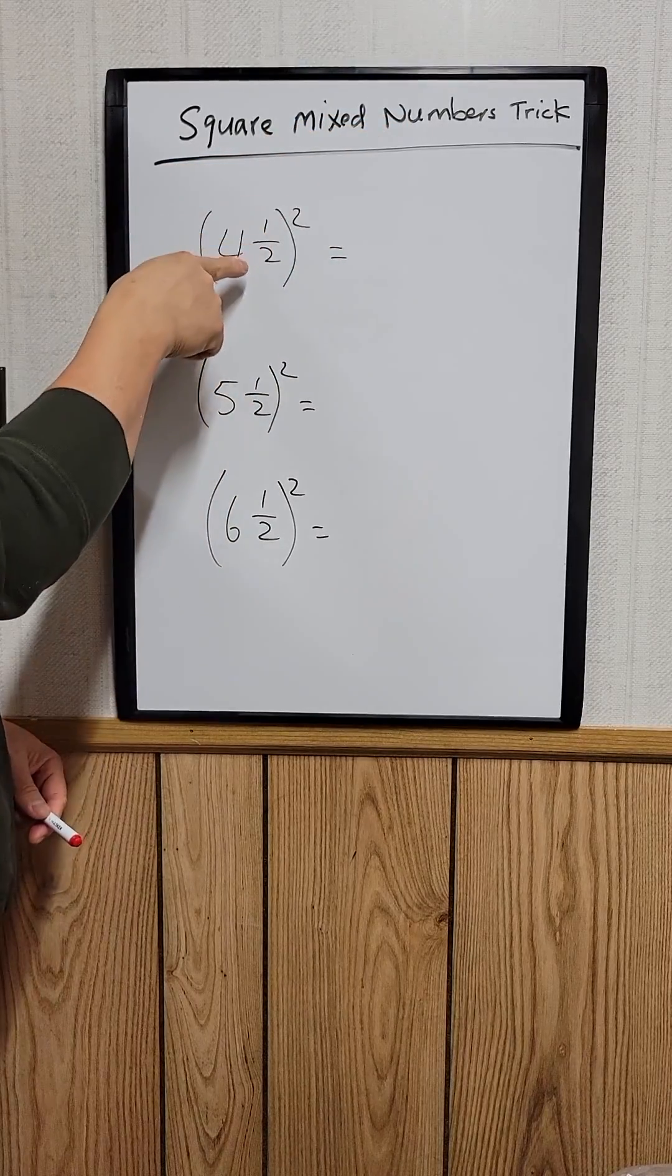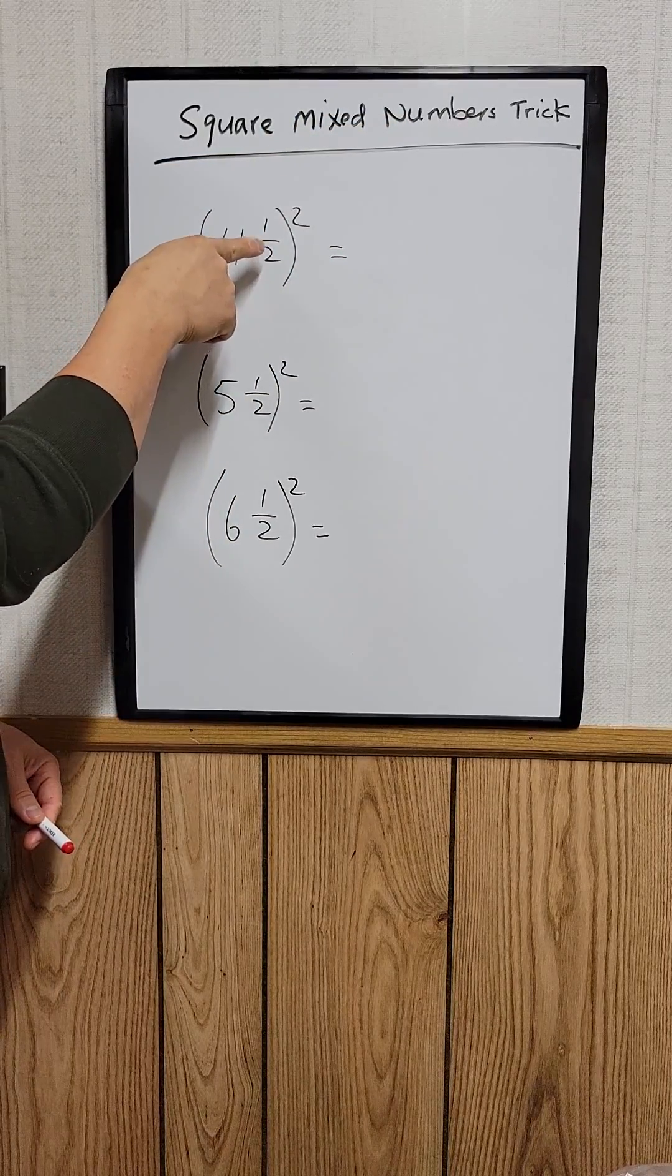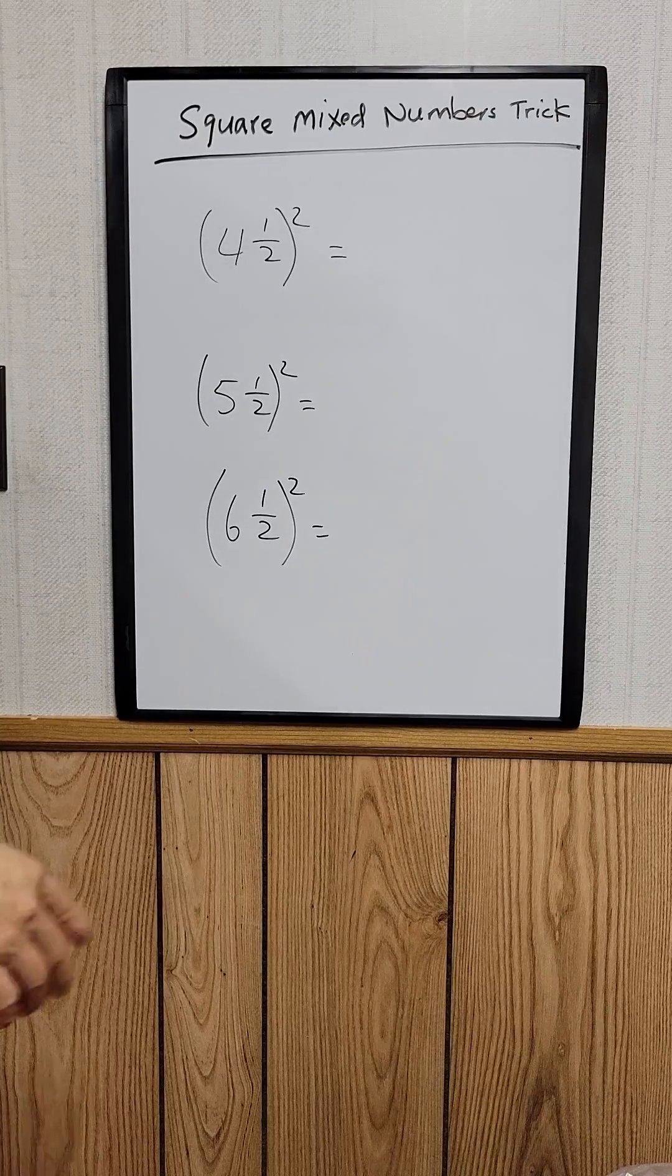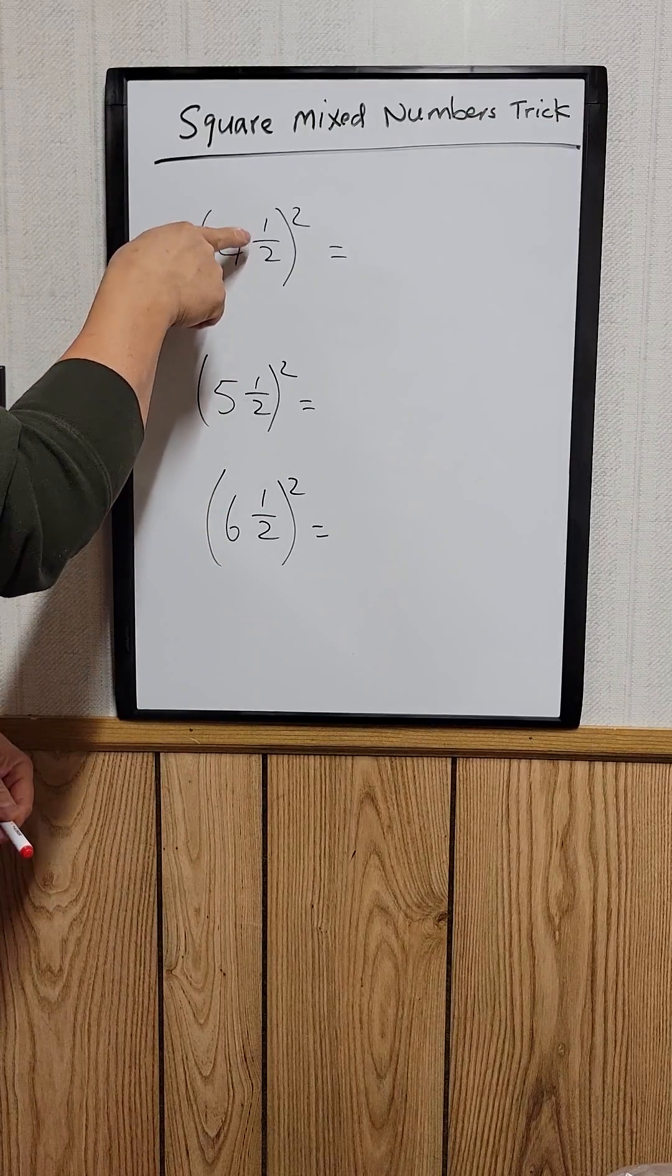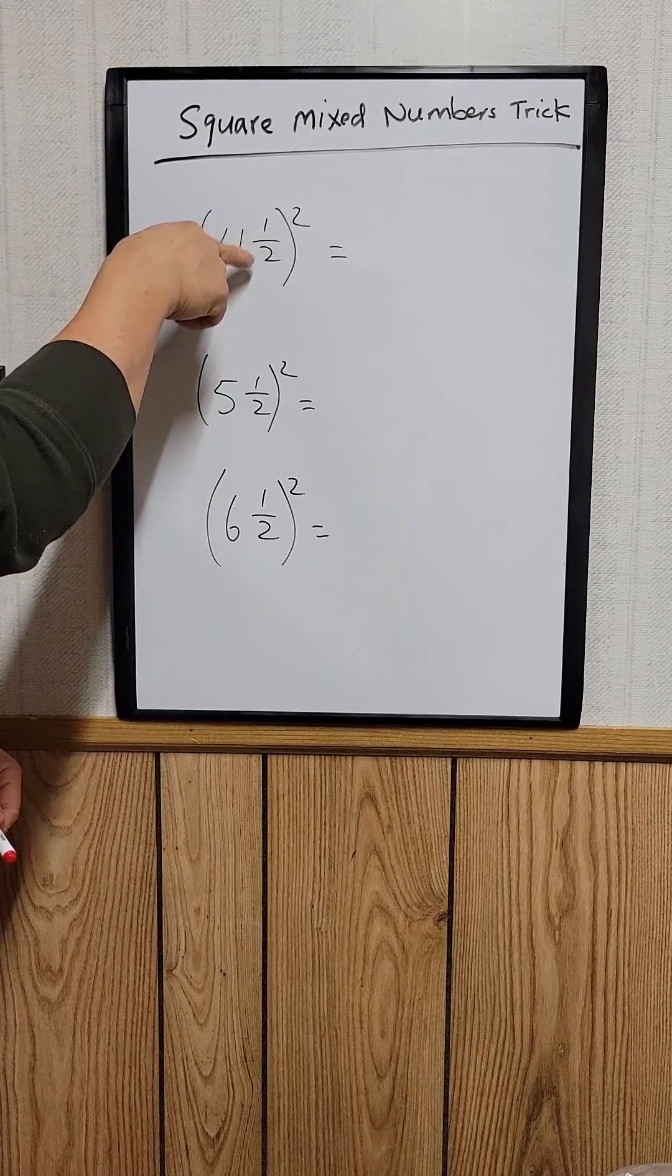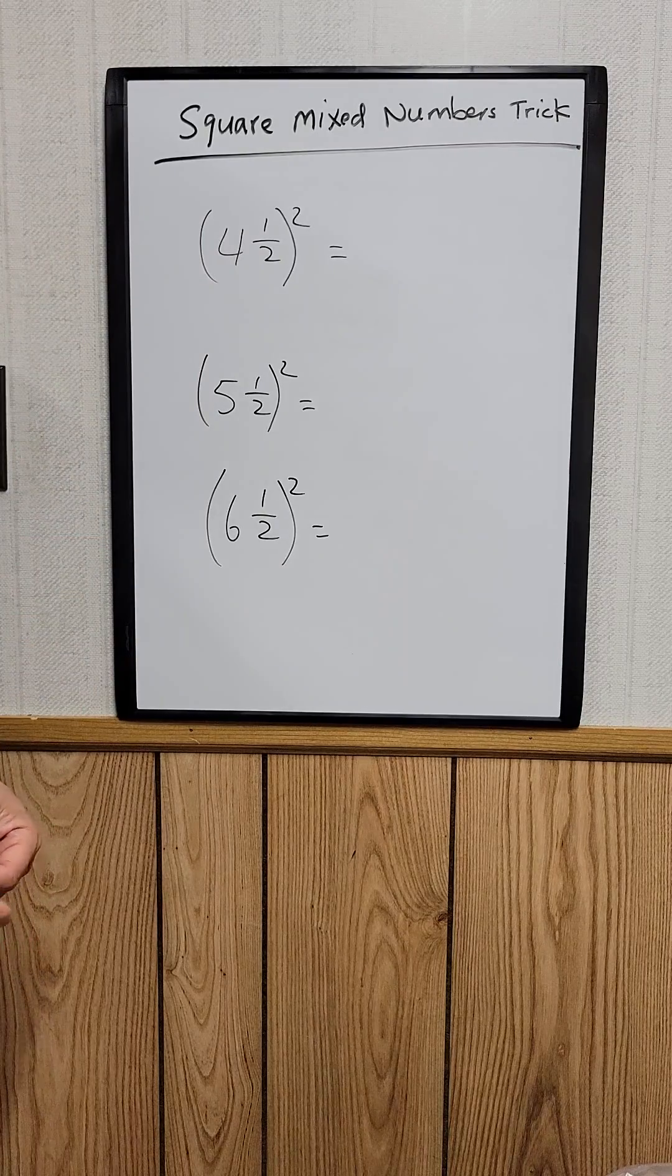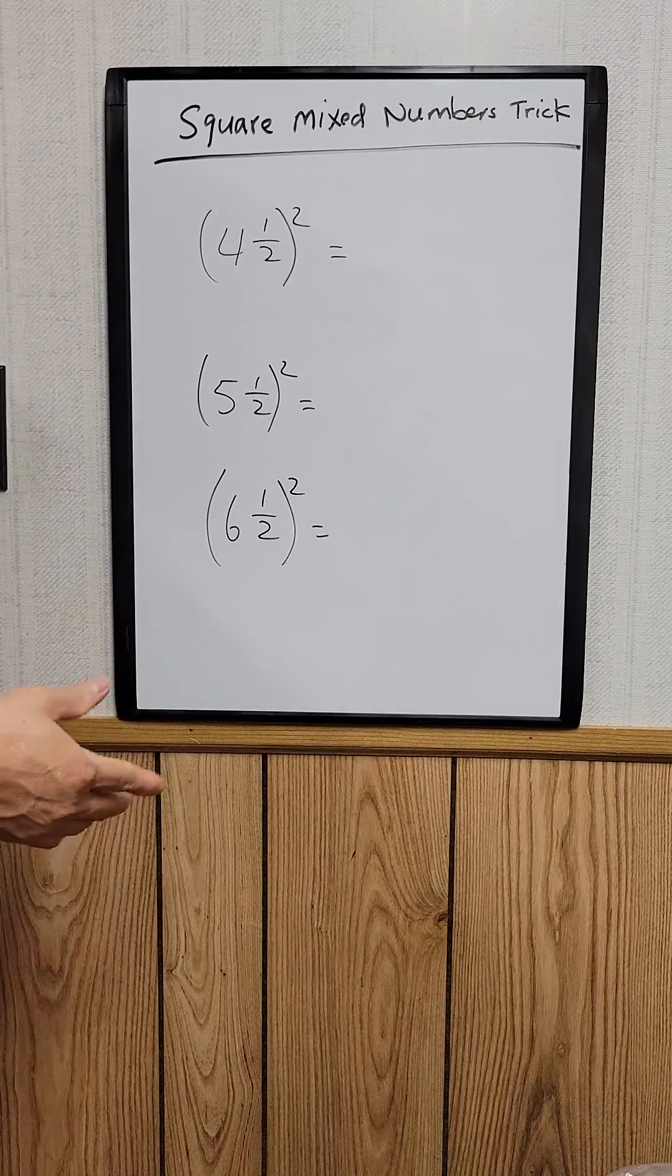To square a mixed number, for example four and one-half squared, this trick only works when you have a one-half at the end. It doesn't work with one-fourth or one-fifth or anything like that, only works with one-half.